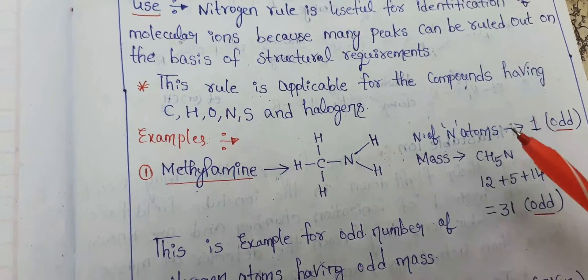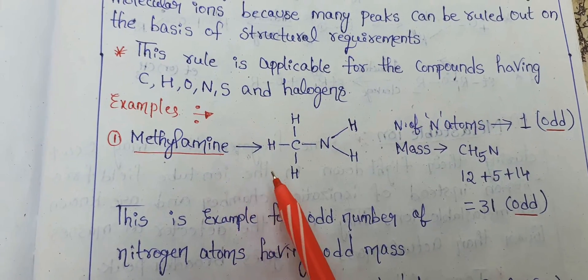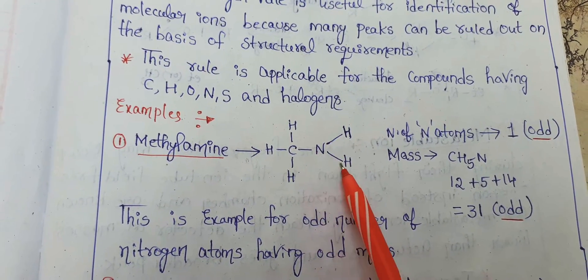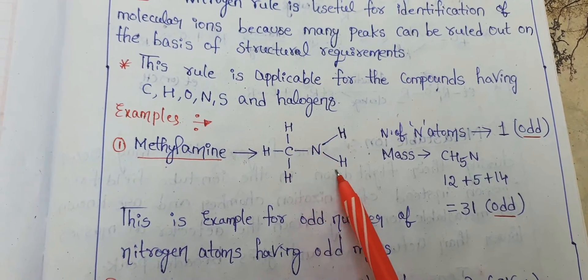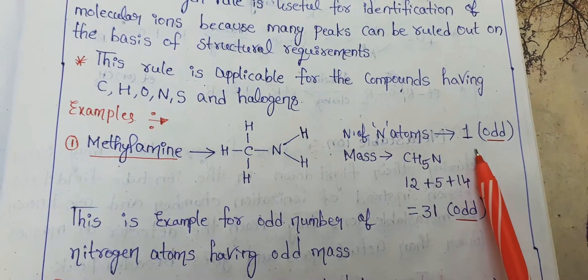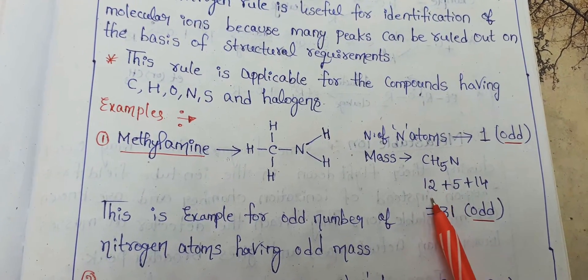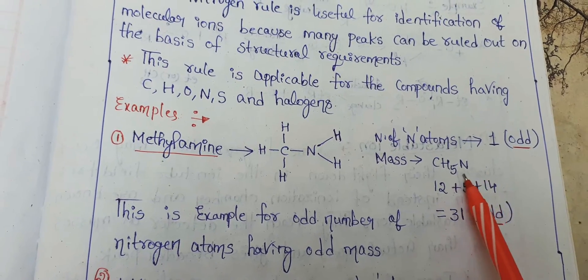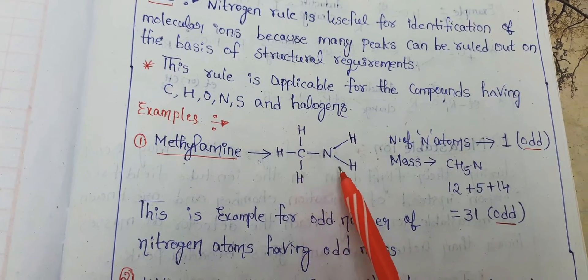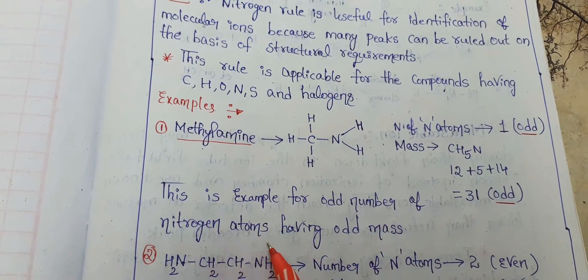Let us understand this by taking some examples. Here we have taken methylamine. According to our rule, we first count the number of nitrogen atoms. In this molecule, only one nitrogen atom is present, so an odd number of nitrogen atoms is present, meaning we will get odd mass. The mass of carbon is 12, hydrogen contributes 5, and one nitrogen contributes 14, giving a total mass of 31. That is an odd mass. This is an example of an odd number of nitrogen atoms giving an odd mass.